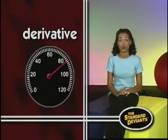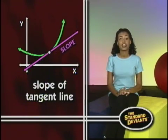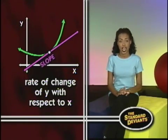The derivative is also equal to the slope of a tangent line to a curve at a particular point, because the slope is a rate of change of y with respect to x.